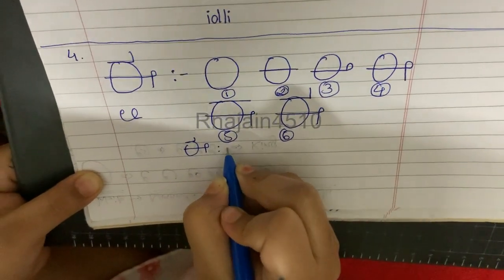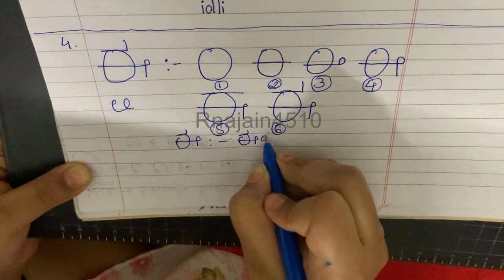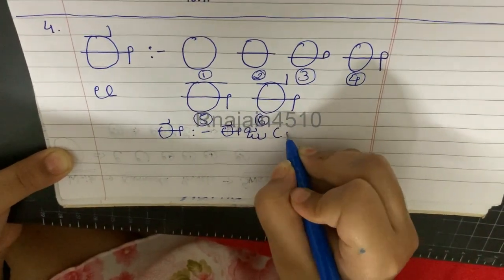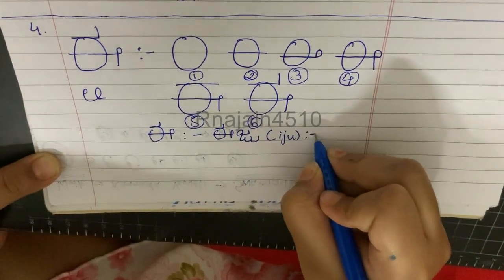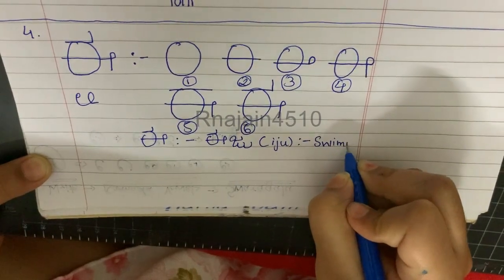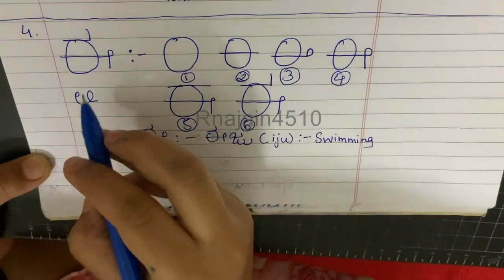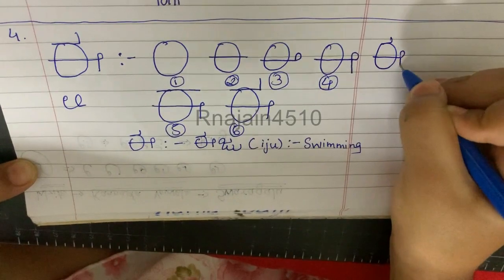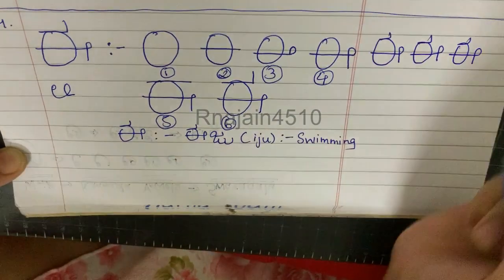E for EJew. In English we also call it EJew. The meaning of EJew is swimming. Now we are going to practice E two or three times. Let's start — E, E, and E.